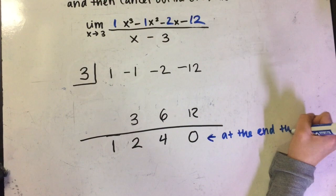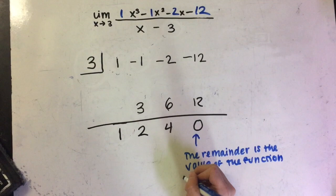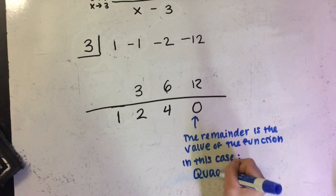At the end, the last number should cancel out, since x minus 3 is a factor of this function. So here is what we have now: 1, 2, and 4 are the quotient of this problem. And the remainder value, 0, is the value of the function. So in this case, the quotient is a quadratic function.